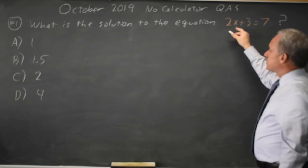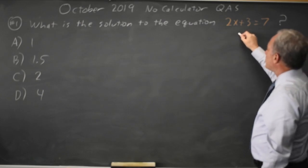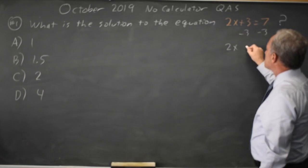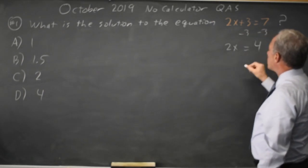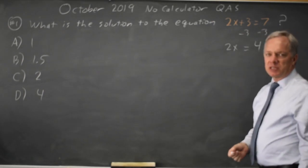Algebraically, I want to get x by itself. Since I'm adding 3 on the left, I'll subtract 3, leaving just 2x equals 7 minus 3 is 4. Always do the same thing to both sides of an equation.